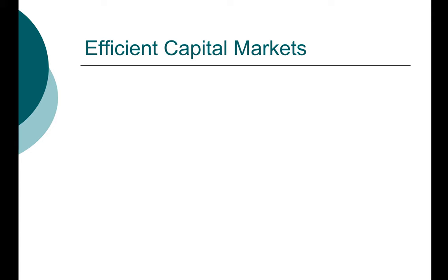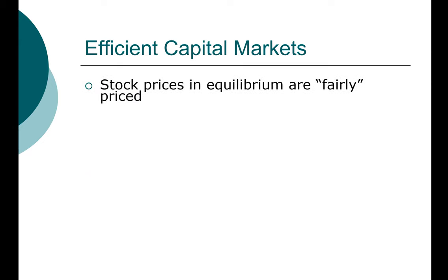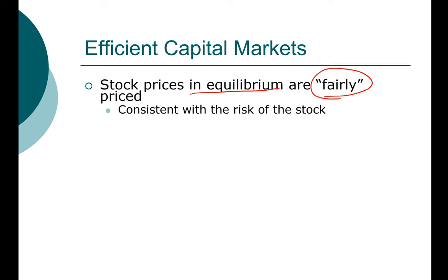First, let's take a look at what happens when markets are indeed efficient. In efficient capital markets, stock prices will be fairly priced. 'Fair' is a very important word here. The other is the concept of equilibrium, drawn from basic economics — supply equals demand, and there's a buyer for every single seller in the stock market. Fair in this context means that the return you'll get by investing in the stock is consistent with the risk of the stock.